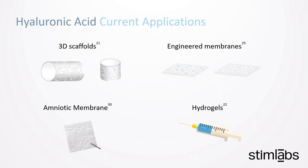Tissue engineering labs have focused on the potential of amniotic membrane for use as a wound covering. They cite the complex scaffold of collagen, proteoglycans, and glycosaminoglycans like hyaluronic acid that are found throughout the amnion, chorion, and intermediate layer.